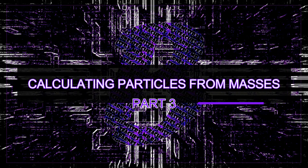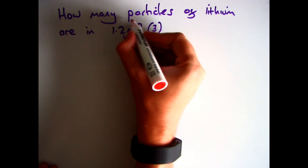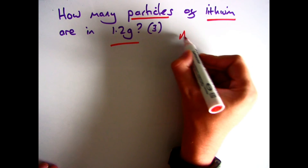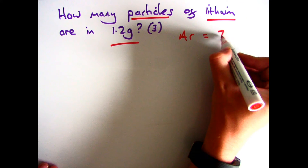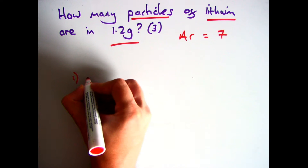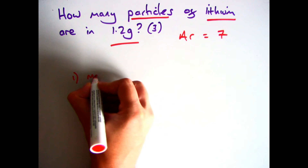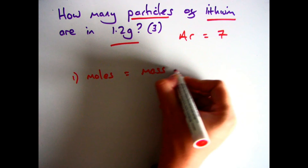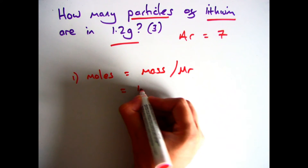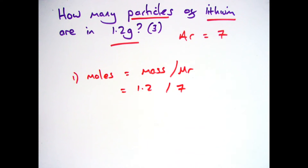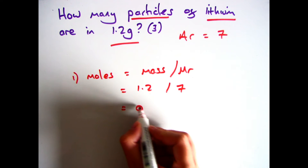The third section brings both parts together: how to work out particles when you're given a mass. If a question says 'how many particles of lithium are in 1.2 grams?' — worth three marks, with the atomic mass of 7 for lithium — there are three steps. First, convert mass to moles using moles = mass divided by Mr. So 1.2 grams divided by 7 gives 0.171 moles.